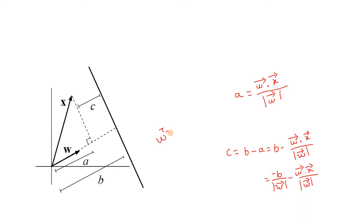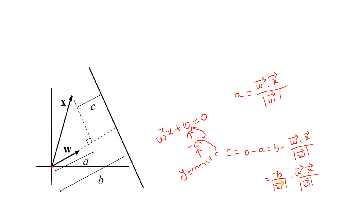Recall the hyperplane equation: omega-transpose X plus B equals 0. We obtained B as minus C, where this C came from the line equation Y equals MX plus C, and from minus C we get this B. I have shown the derivation: the distance between the origin and the hyperplane is minus B divided by magnitude of omega. So substituting, C equals minus B minus A.